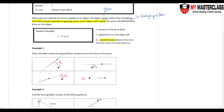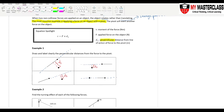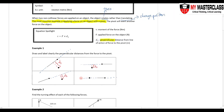If there is a force where, after extending the line of action, the line cuts through the pivot, then the perpendicular distance is zero. There is no distance from the pivot to the line of action of the force. This means there is no moment, which means the object does not turn.